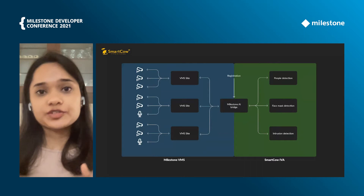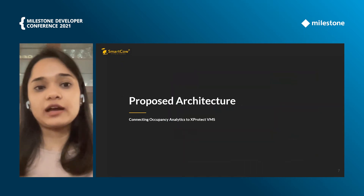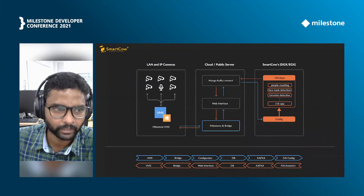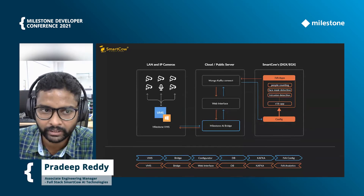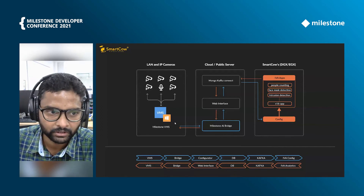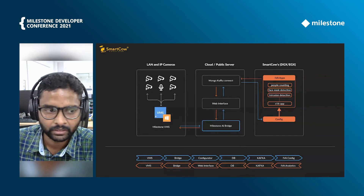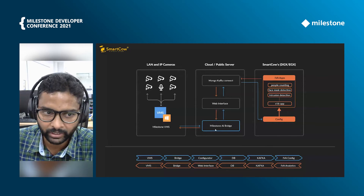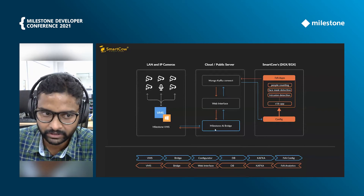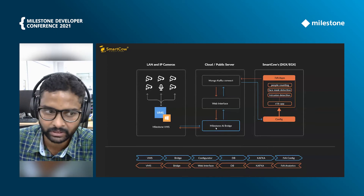Now let's look into the proposed architecture that we have developed at Smartcow. Let me hand over to my colleague to take you through the detailed integrated architecture. This is a basic architecture showing how we integrated Milestone VMS, Milestone AI Bridge — installed on our Windows Workstation with cameras added, events, alerts, and selected configurations set up. Going to Milestone AI Bridge, this is a major component in the integration. We can retrieve cameras and stream-related information, and also send events or analytics generated from the IVA apps and web interface.